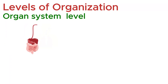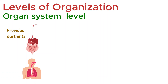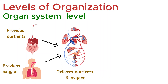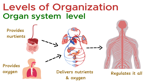The digestive system provides nutrients, the respiratory system provides oxygen, the circulatory system delivers both to cells, and the nervous and endocrine systems regulate it all. In short, organ systems are where the complexity of life begins to truly reveal itself, turning individual organs into a fully functioning network.